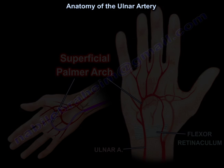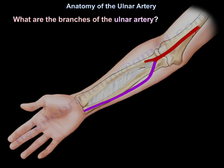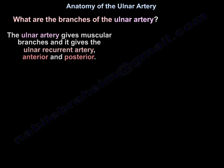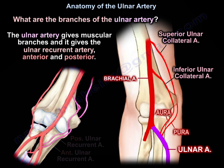What are the branches of the ulnar artery? The ulnar artery gives muscular branches, and it gives the ulnar recurrent artery — anterior and posterior.